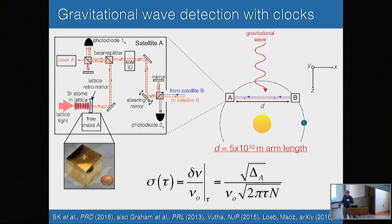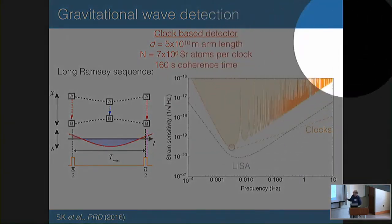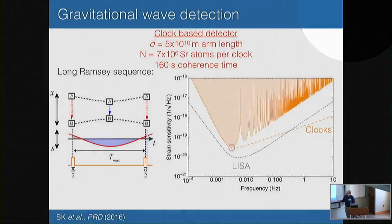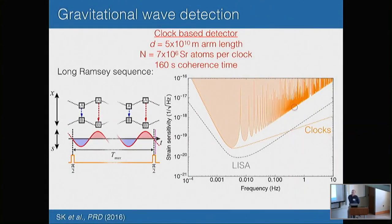You can write down what you expect the sensitivity of your detector to be — it's essentially the quantum projection noise of the number of atoms on each spacecraft and the line width of the atomic transition. Plugging in numbers: 7 times 10 to the 6 strontium atoms per clock, taking full advantage of the coherence time of about 160 seconds, you get a sensitivity comparable to LISA. However, it seems to fall off at higher frequencies because instead of spatial averaging, you have a time average. If you're probing with a Ramsey sequence and your gravitational wave oscillates quickly, it averages out and you miss a lot of the signal.